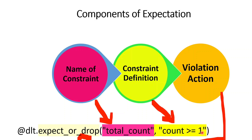Coming to total_count — this is nothing but the name of the constraint. When you want to apply a certain data quality check, you give it a meaningful name. This is a user-defined name; we can give anything. In this case I have given total_count, but we can give any name. So the name of the constraint is one component. The constraint definition is the second component — this is where we perform the actual data quality check. In my dataset I have a column called count, and that count column cannot accept any value less than one. So I am defining the condition: count should be greater than or equal to one. This is the definition of the constraint.